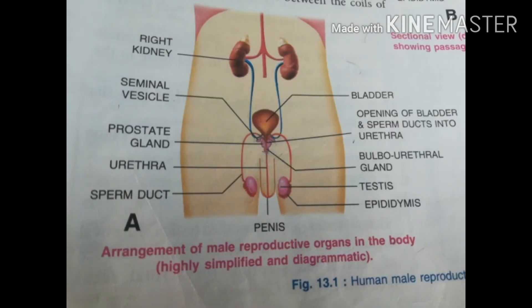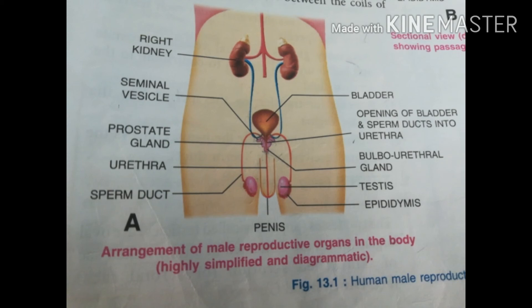Now let's study the function, location and shape of the testes. The testes is an oval organ — so its shape is oval. Its location is in the scrotum. The scrotum is the thin-walled sac of skin that helps in temperature regulation of the testes. Sperms are produced in our body at a temperature of 2–3 degrees Celsius lower than that of the body. When the body is too hot, the scrotum loosens and hangs down, moving away from the body, thereby reducing the temperature of the testes. When the body temperature is too cold, the scrotum's skin contracts and gets closer to the body for more warmth.